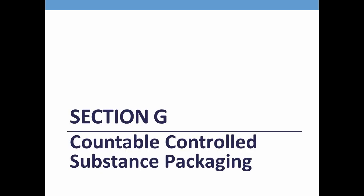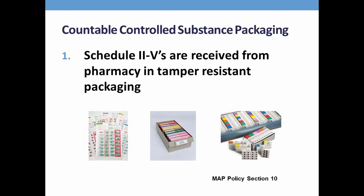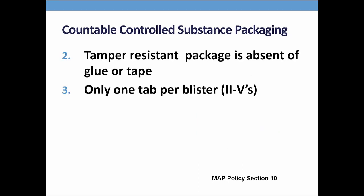I'm now going to turn the webinar over to my counterpart, Heather Lake. Thank you Carolyn and hello everyone. I will continue with Section G: countable controlled substance packaging. All scheduled 2-5 medications must be received from the pharmacy in tamper-resistant packaging. The package of medication may not have indication of tampering such as glue, tape, or staples on the package. Scheduled 2-5 meds may only have one tablet packaged per blister.